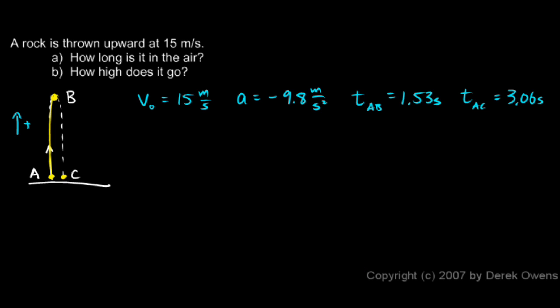And now in part B, I'm asked how high does it go. So to find the height that the rock reached, I can just use this equation: y is y₀ plus v₀t plus ½at². And to find the height, that's going to be the height at point B or its y value at point B.